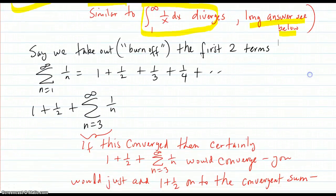Back to this example. Let's say we burn off the first two terms. Again, if this part here converged, then certainly one plus a half added to whatever that number was would also converge.